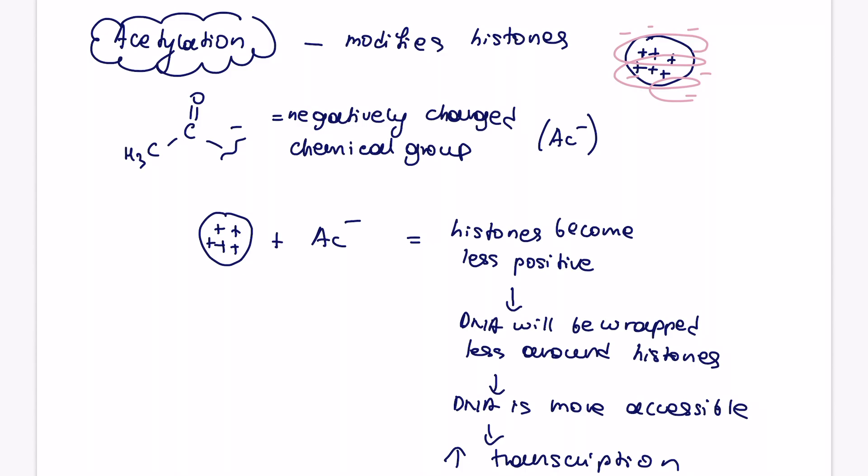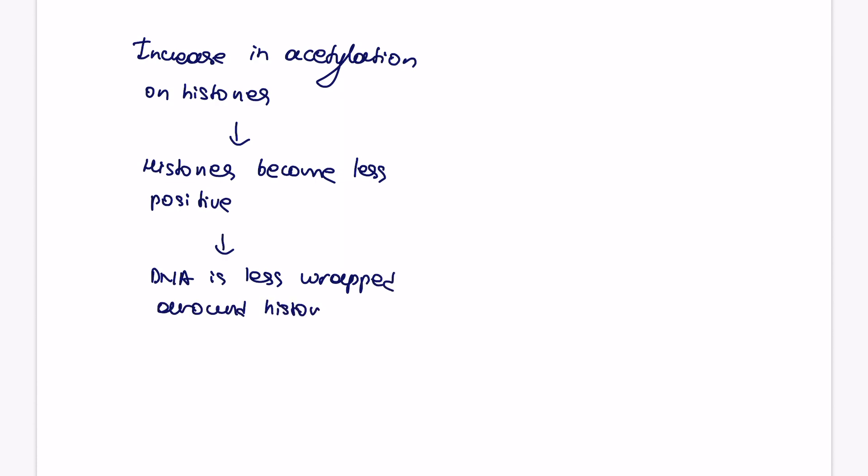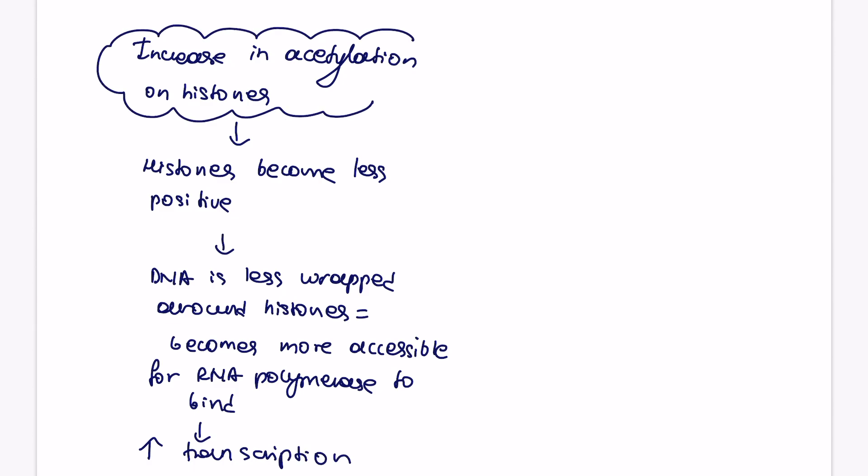So this is the summary of acetylation in this case. So let's draw a nice flow chart to summarize this. So increase in acetylation on the histones will result in the histones becoming less positive, so the DNA will be less wrapped around it, and therefore making it more accessible for RNA polymerase to come and transcribe parts of the DNA, and so therefore the transcription will go up. So I would use this as a model answer, and it's kind of a nice flow chart to break it up a little bit as well. So it usually would be like a two or a three marker in exam.